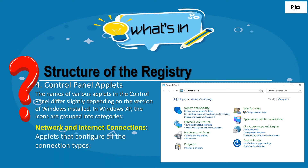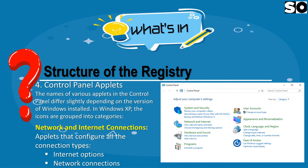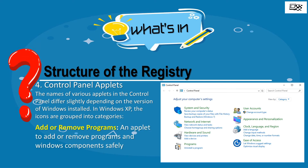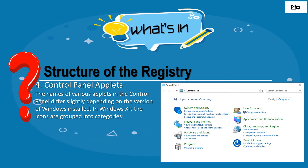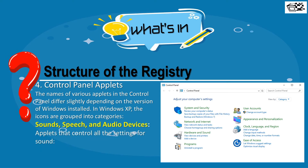Network and Internet Connection contains applets that configure all the connection types, including Internet Options and Network Connections. Add or Remove Programs contains applets to add or remove programs and Windows components safely. Sounds, Speech, and Audio Devices contains applets that control all the settings for sound.